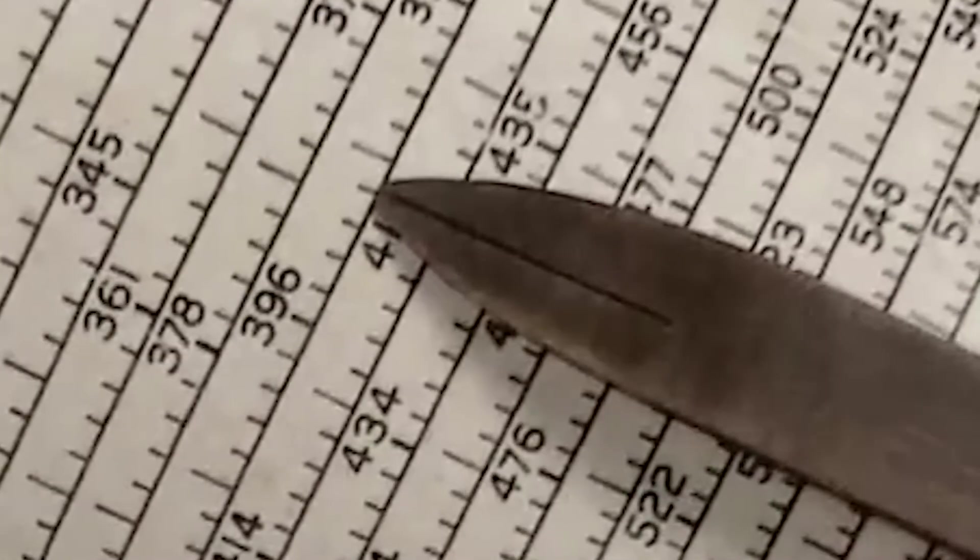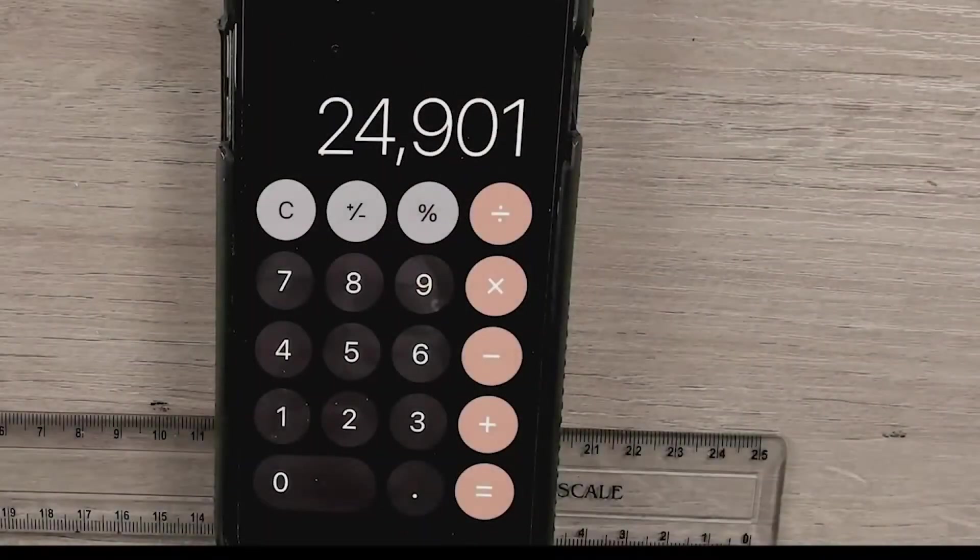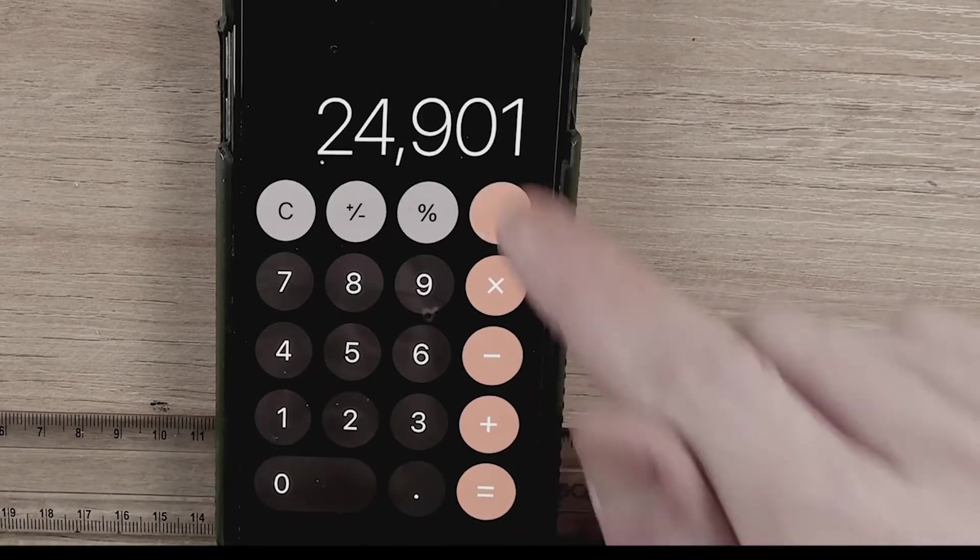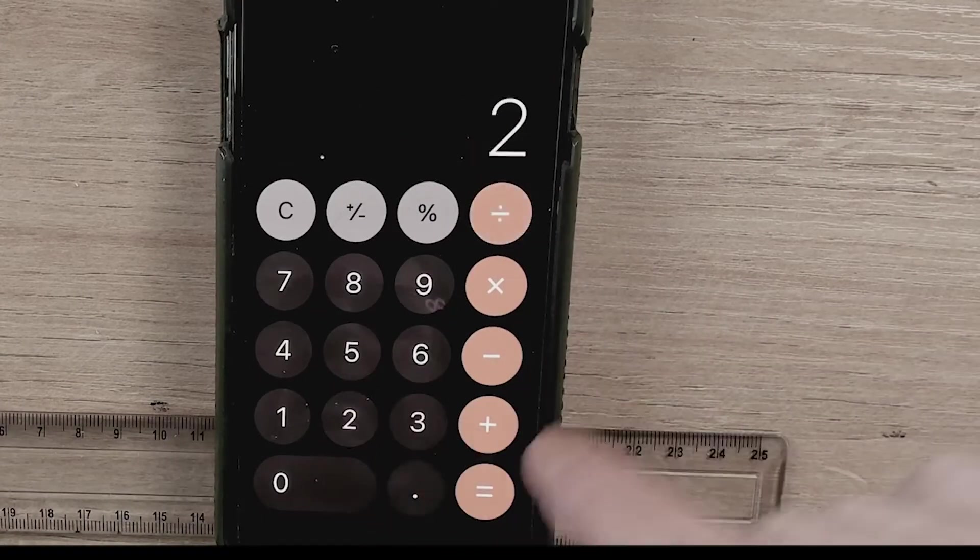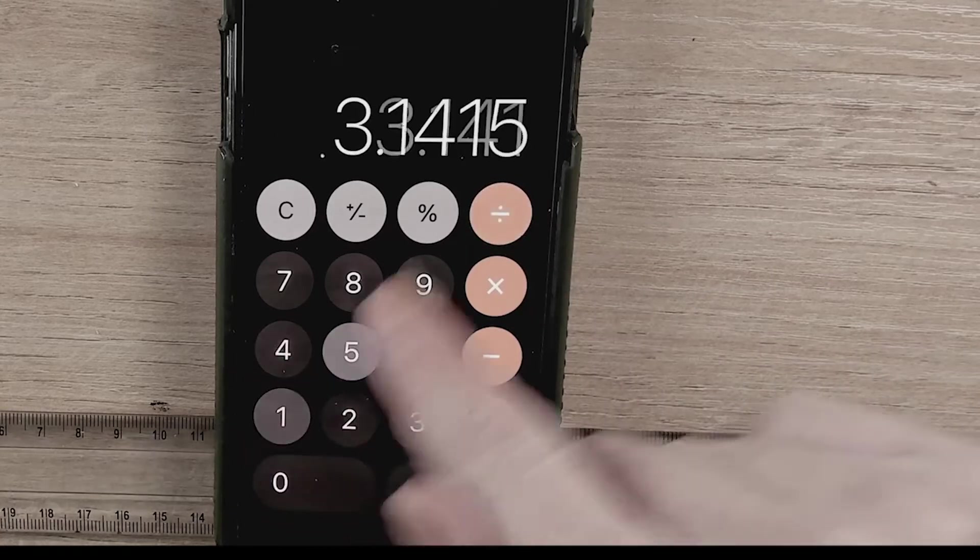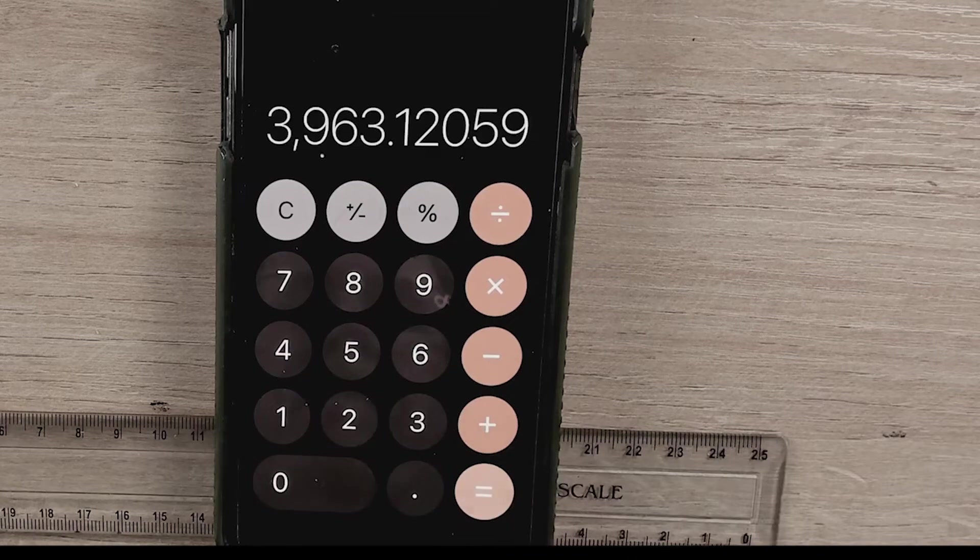Now let's compare this to a modern calculator. Now in the modern calculator, we take 24,901 miles. We divide it by 2. And then we divide that by 3.14159, which is pi. And we get 3,963 miles. The Fuller calculator was 1 mile off.